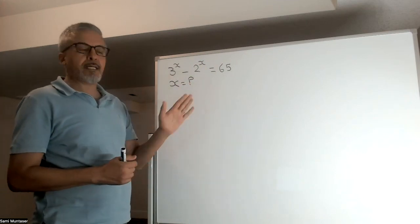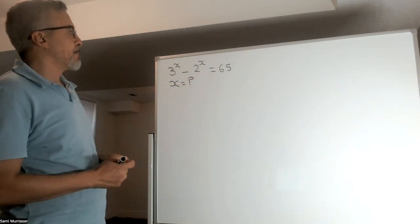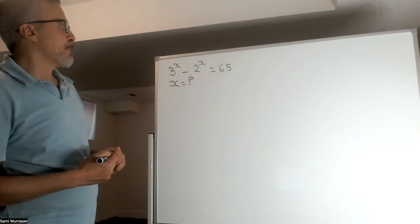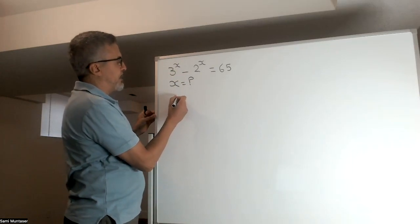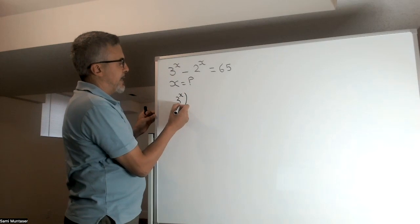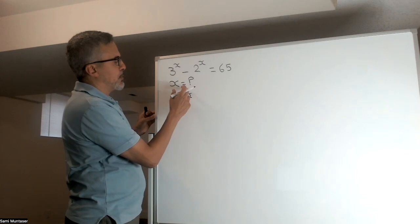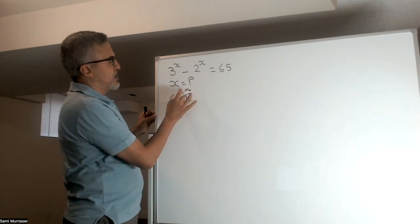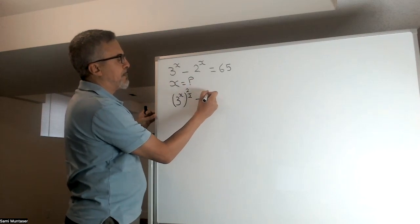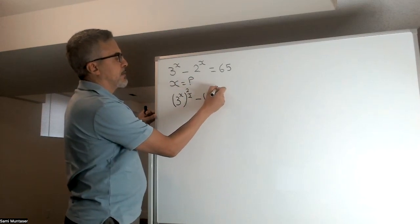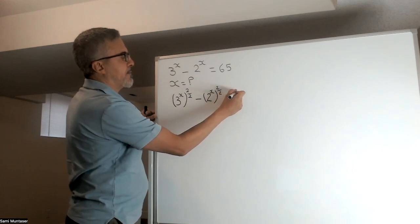So, what I'm going to do to this, I'm going to change it into the form of difference of squares to be able to do it. How are we going to do that? So, what I'm going to do, I'm going to write the 3 to the power of x. I'm going to square it and then divide it by 2 at the same time, because 2 divided by 2 is 1. So, 1 doesn't change this. And I'm going to do the same thing to this. 2 to the power of x to the power of 2 over 2 equals 65.